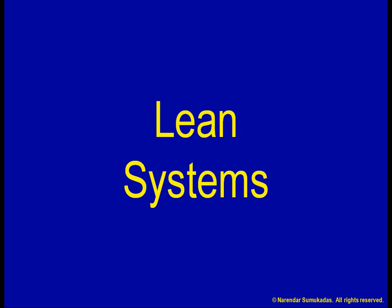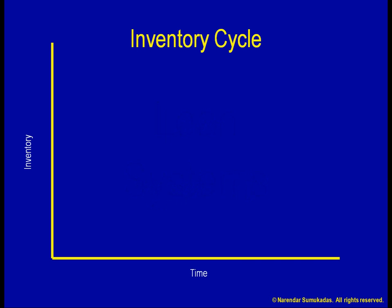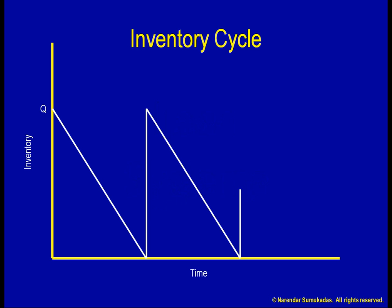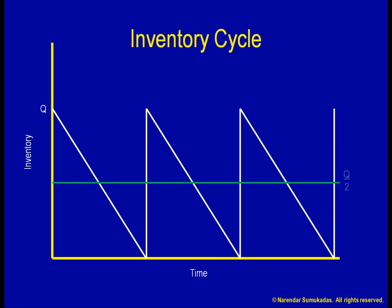When we look at the typical sawtooth inventory cycle, we see that if our batch size is Q, our average cycle inventory will be Q divided by 2. Therefore, if we want to reduce the inventory, all we have to do is reduce the batch size.